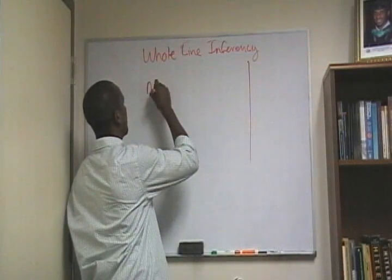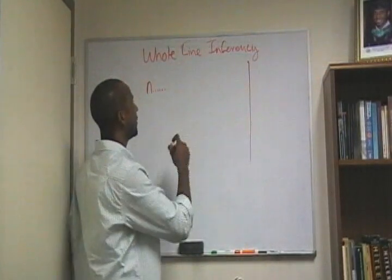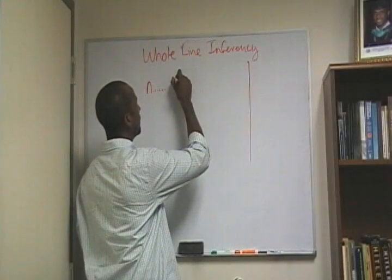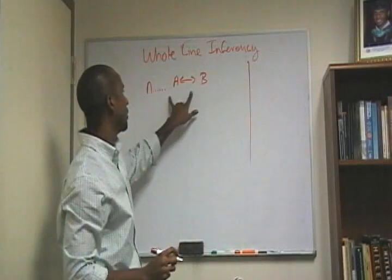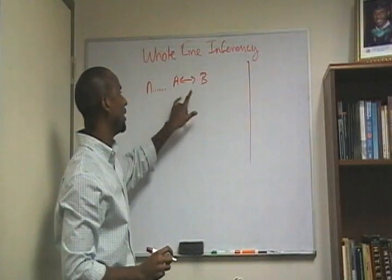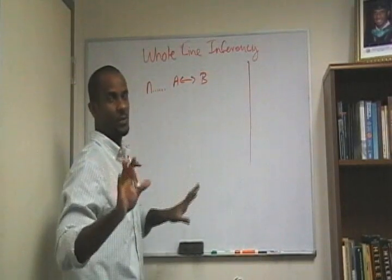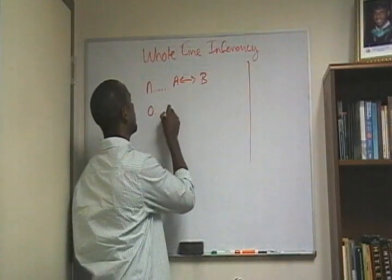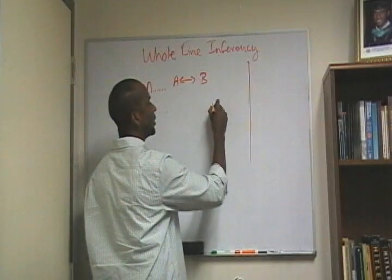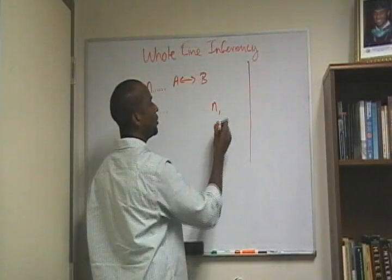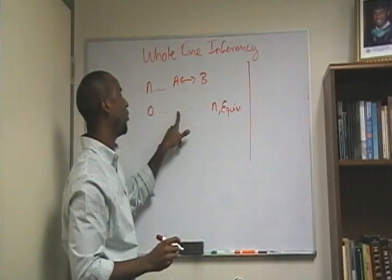Let's say on line N of my attempt to go through this whole line inferencing, I have the biconditional A if and only if B. What I want to do is see how much I can deconstruct this. Immediately you should recognize that on line N, I can use equivalence to change this form.